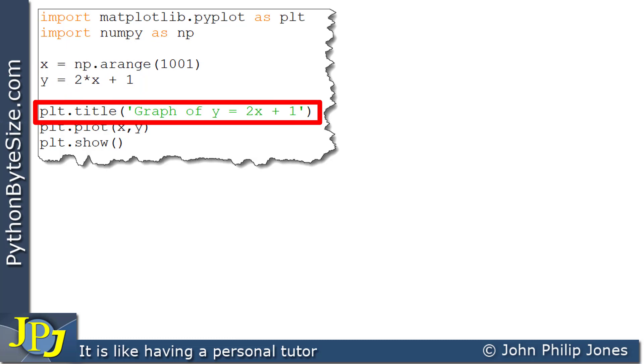On this line, we're invoking the title of plt, and we're passing in this string, and this will label the graph with the string you can see here.